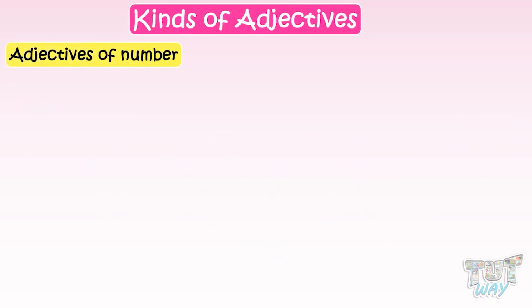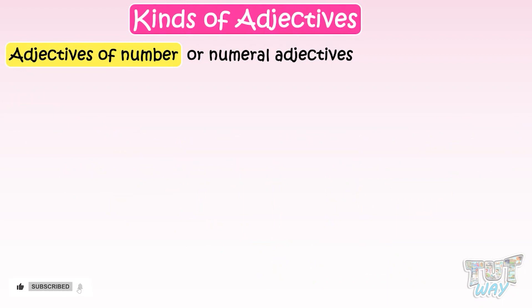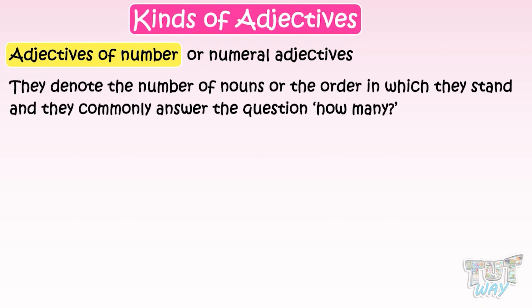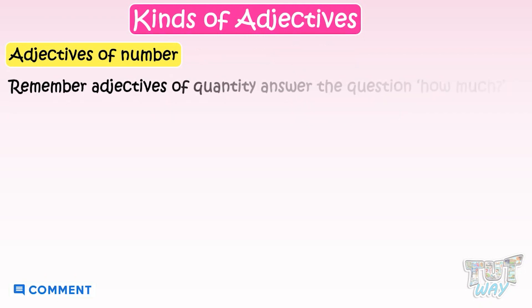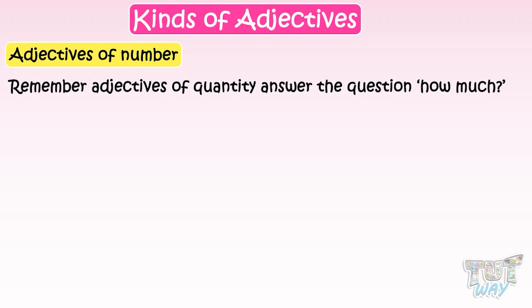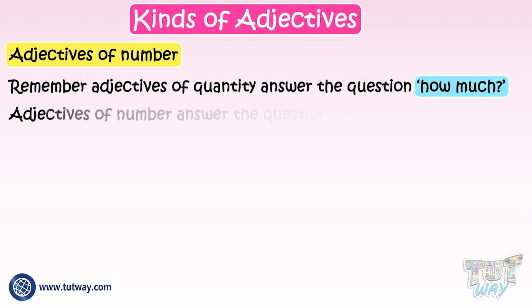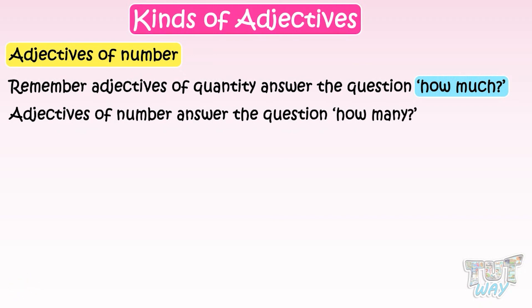Numeral Adjectives, or Adjectives of Number, denote the number of nouns or the order in which they stand, and they commonly answer the question: how many? Remember, Adjectives of Quantity answer the question how much, while Adjectives of Number answer the question how many.